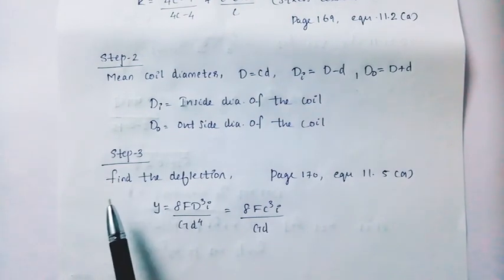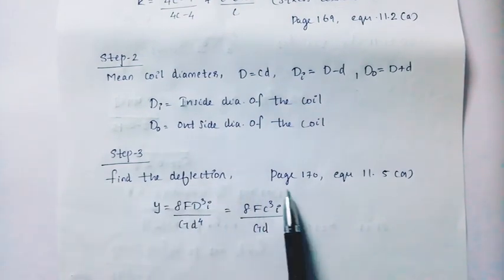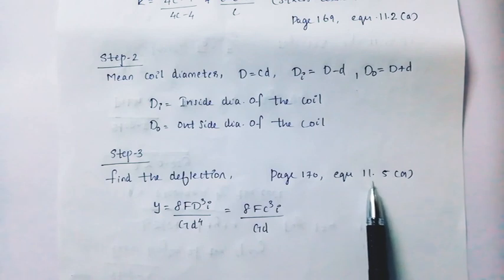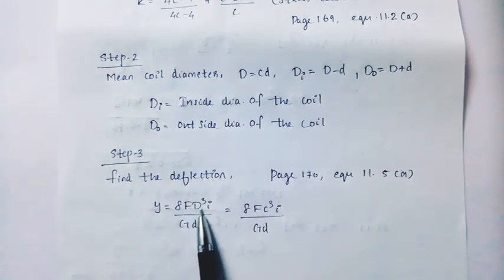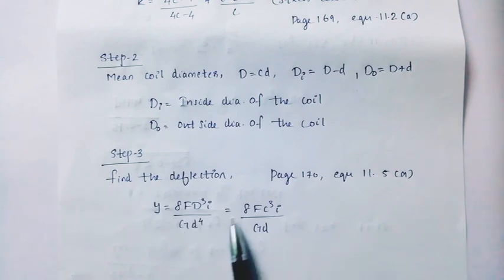Now step 3 is the deflection. Page 170, equation 11.5a. Y equals 8FDK divided by Gd to the 4th, equals 8FC cubed i divided by Gd.